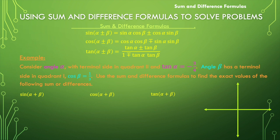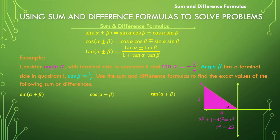In the second example, angle alpha has a terminal side in quadrant two and the tangent is negative three-fourths. Since it's in quadrant two, the x value will be negative four. Using the Pythagorean theorem to find the hypotenuse: r squared equals 25, so r equals positive five — the hypotenuse is always positive.